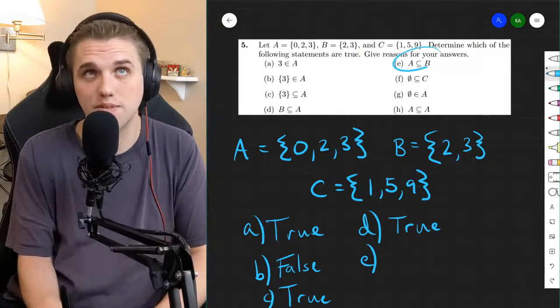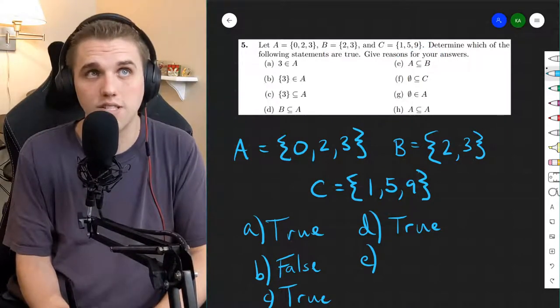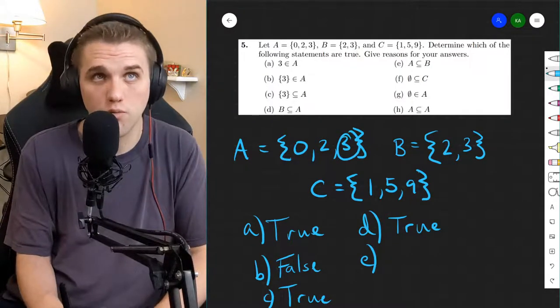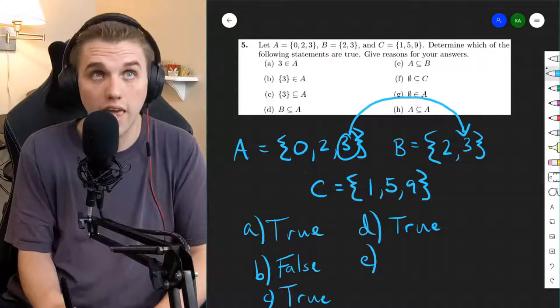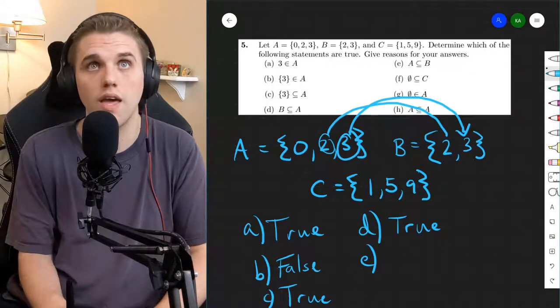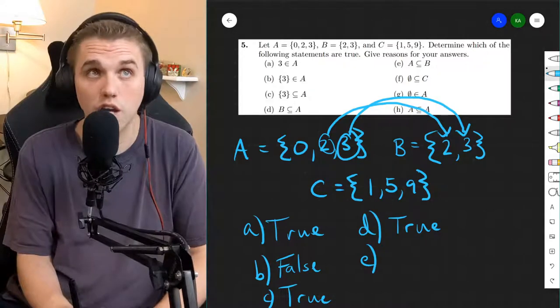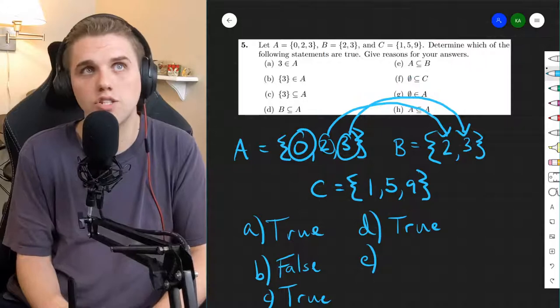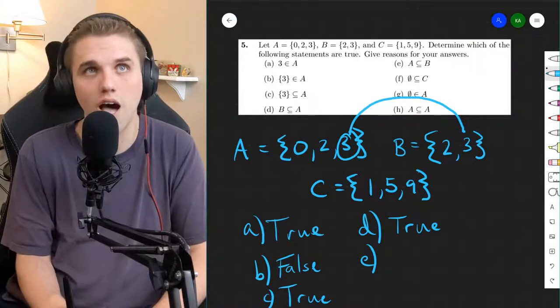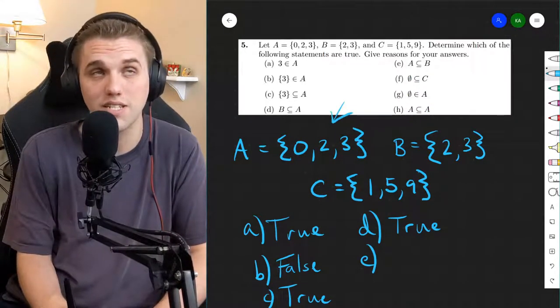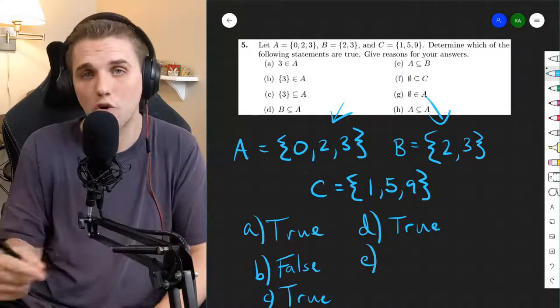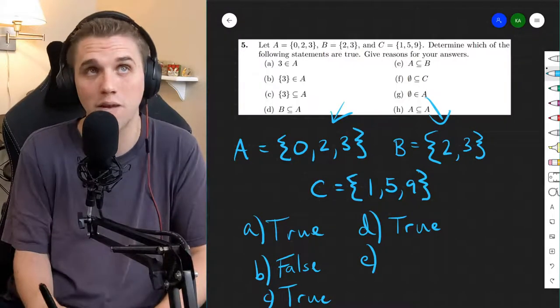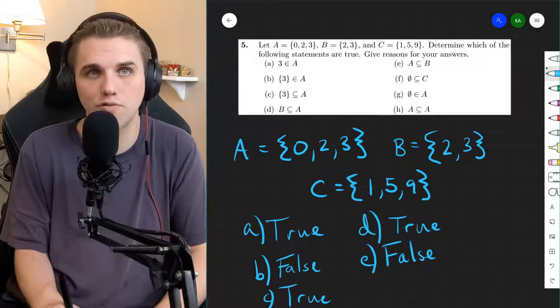Well, what about A being a subset of B? Well, in this case, we have to check if every element in A is also an element of B. So is three in B? Yeah, three is in B. What about two? Is two in B? Yes, two is in B. So far, so good. What about zero? Zero is not in B. And so because of that, this is false. Not every element in A is also an element in B. And in order to be a subset, you need every element in A also in B. So this is false.